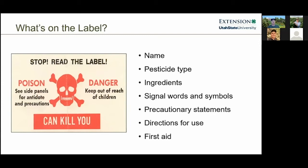Labels include the product name, the pesticide type (fungicide, herbicide, insecticide, molluscicide, etc.), and the ingredients. The ingredient statement can be complex due to chemical names, but common shorter names are usually provided — for example, '2,4-D' rather than its full chemical name. Signal words and symbols are also present, such as the 'Danger-Poison' label with a skull and crossbones for highly toxic, restricted-use products. Signal words indicate how toxic the product is if ingested.